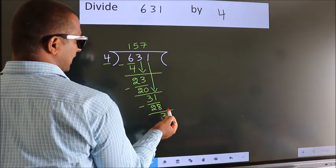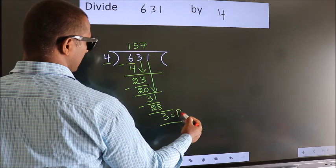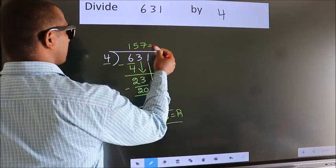No more numbers to bring it down. So, we stop here. This is our remainder. This is our quotient.